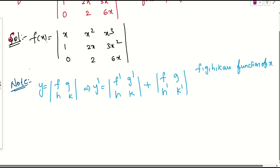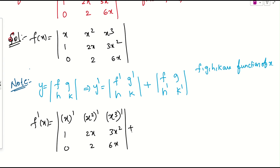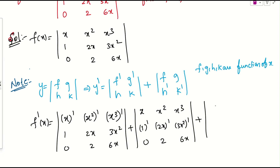So f dash of x means first row derivative. We write the determinant three times: first, with the first row differentiated — derivatives of x, x squared, x cubed — and rows 2 and 3 as is; plus the first row as is with the second row differentiated; plus the first row as is and second row as is with the third row differentiated.